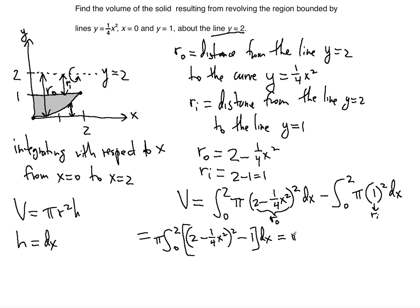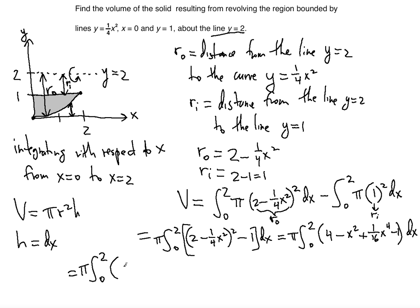Now let's simplify. Expanding (2 - (1/4)x²)² using the FOIL method: 4 minus (1/2)·(1/2) gives minus x², and then plus (1/16)x⁴. Subtracting 1, the integrand simplifies to (1/16)x⁴ minus x² plus 3.